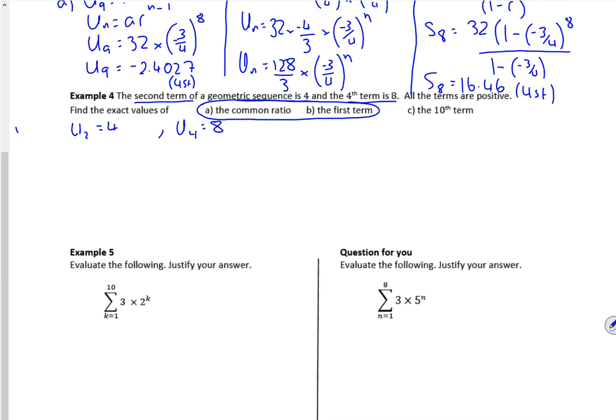So I'm using the formula, which is u2 is ar, and that's equal to four. u4 will be ar cubed, and that's equal to eight. Now what I want to do, I want to stick this bit into here somehow. And there's a few different ways of doing it. What I like, I quite like this little bit of sneakiness here, that the ar cubed is ar times by r squared. So this four is ar. So I've got four r squared is eight. r squared is two. So r is plus or minus the square root of two.